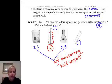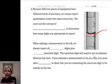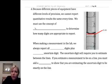Because different equipment has different levels of precision, we cannot report the values the same every time. We must use the concept of significant figures to determine how many digits are appropriate to report. When making a measurement in the lab, we always report all certain digits plus one uncertain digit.